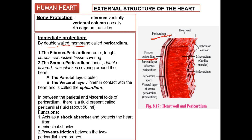The second layer is the serous pericardium, which is the inner double-layered membrane. The serous pericardium itself contains two layers: the first is the parietal layer, and the second is the visceral layer. The visceral layer is in direct contact with the heart wall and is called the epicardium. 'Epi' means above, so epicardium is the layer above the heart.